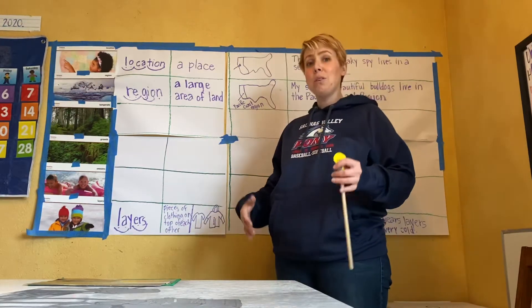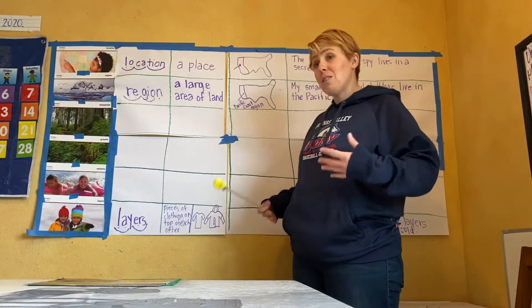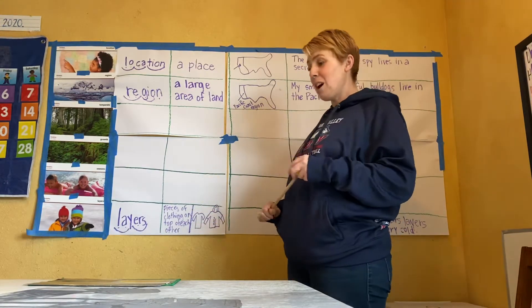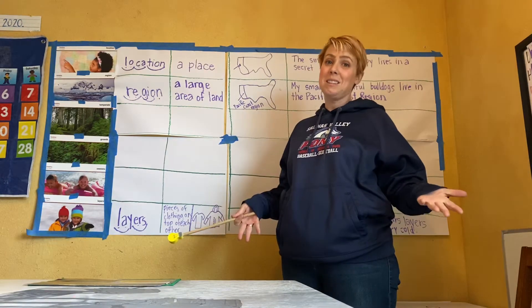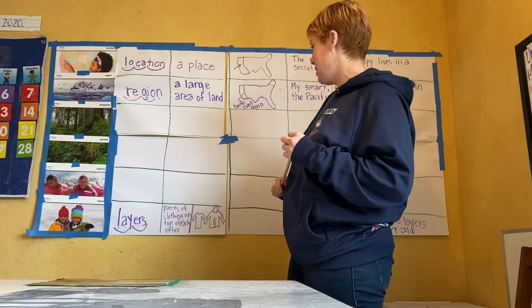And we said that for our purposes, layers are pieces of clothing that are sort of stacked on top of each other. Like, if you wear a t-shirt and then a hoodie and then a jacket on top, those are layers. But many, many things have layers, and we're going to investigate other meanings of that word later in the week.